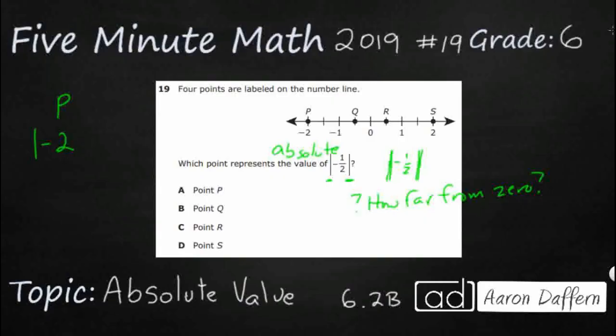What would be the absolute value of negative two? How far away is negative two from zero? It's one, two. It's two away.